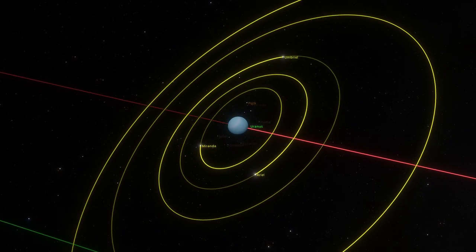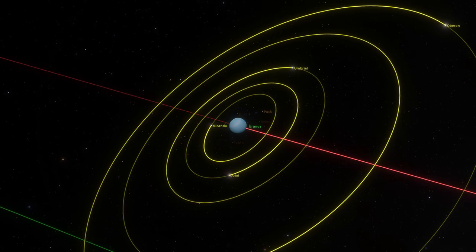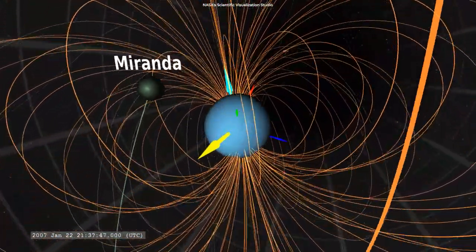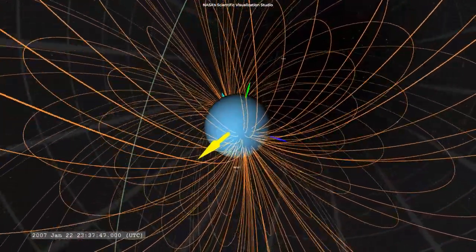Uranus has vertical rings and moons that orbit around its tilted equator. Also, unlike other planets, Uranus's magnetic field is a complete mess and off the center.